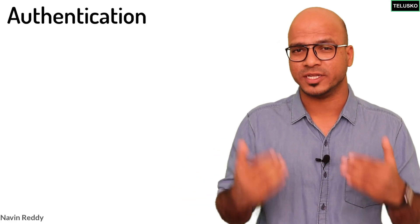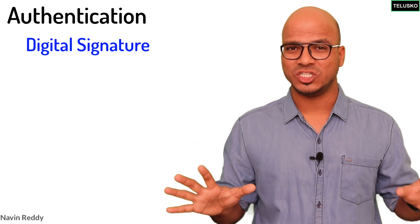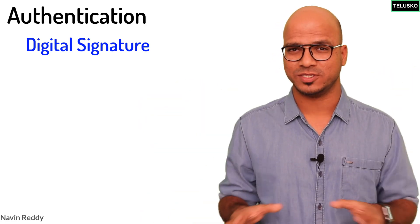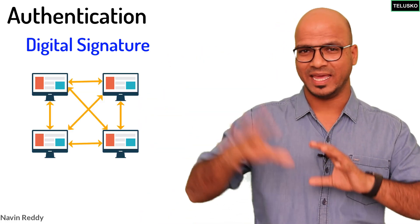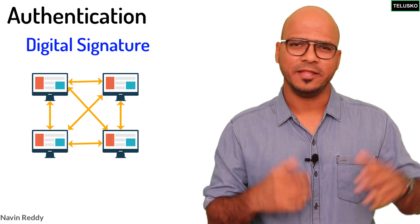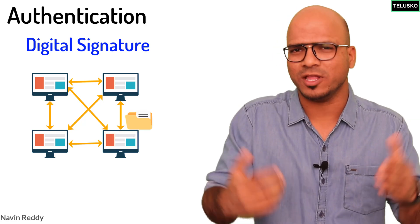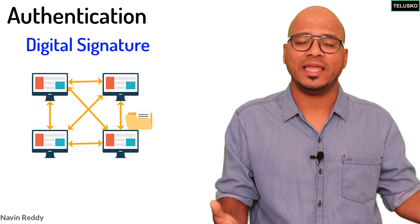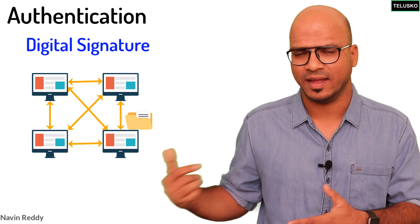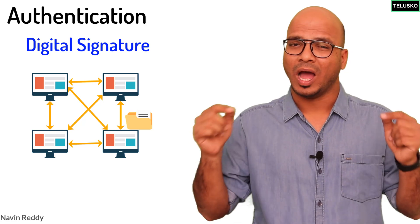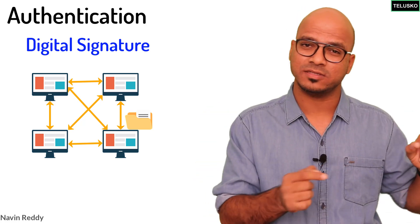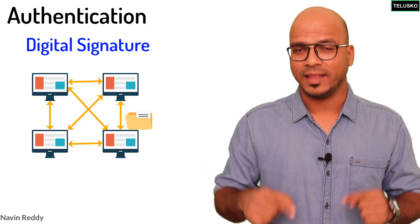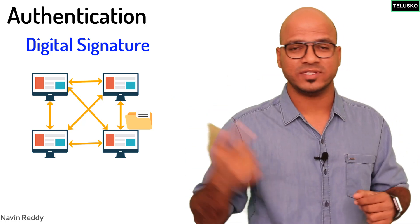What about authentication — how do we achieve that? And that's where we have the concept of digital signature. Let's imagine we have multiple nodes on the network. One of them is A and the other one is B. B has received a packet saying 'let's meet at 6 p.m.' and the packet claims it is coming from node A. This is where the problem starts — how can you be sure this packet actually came from node A, and how can node A prove it sent that message?